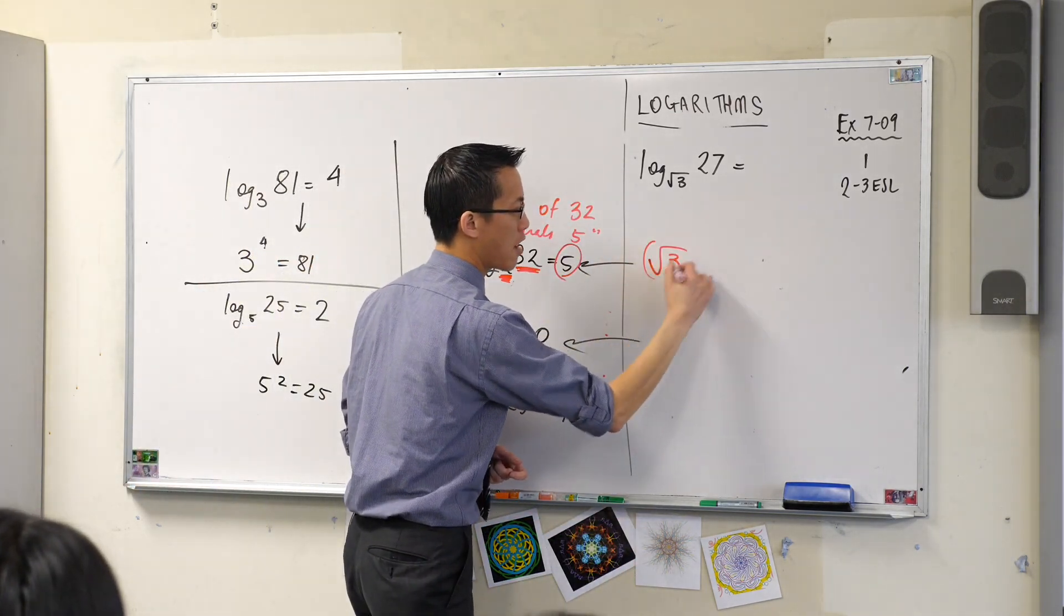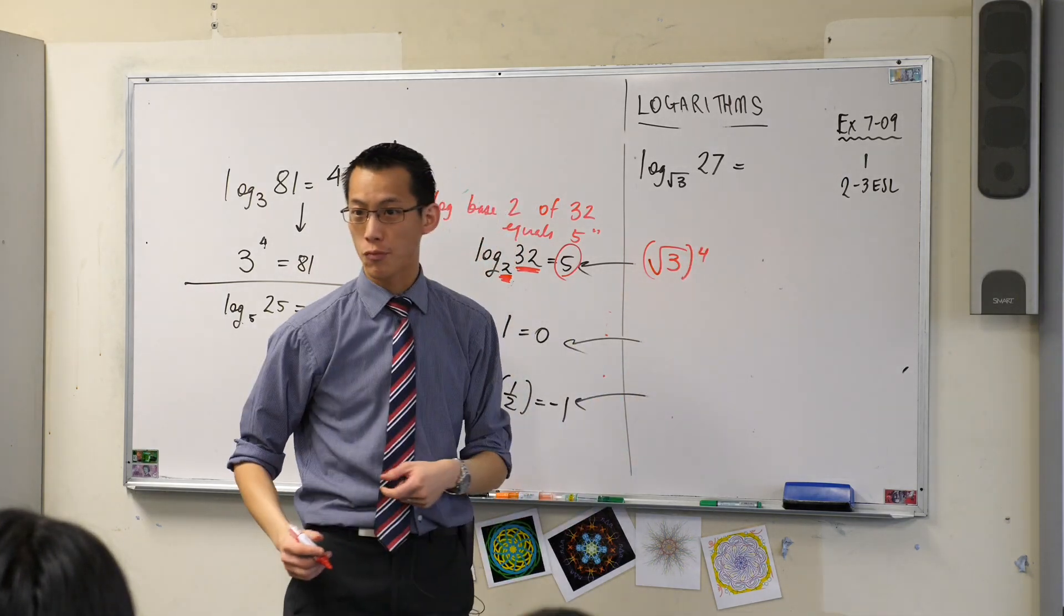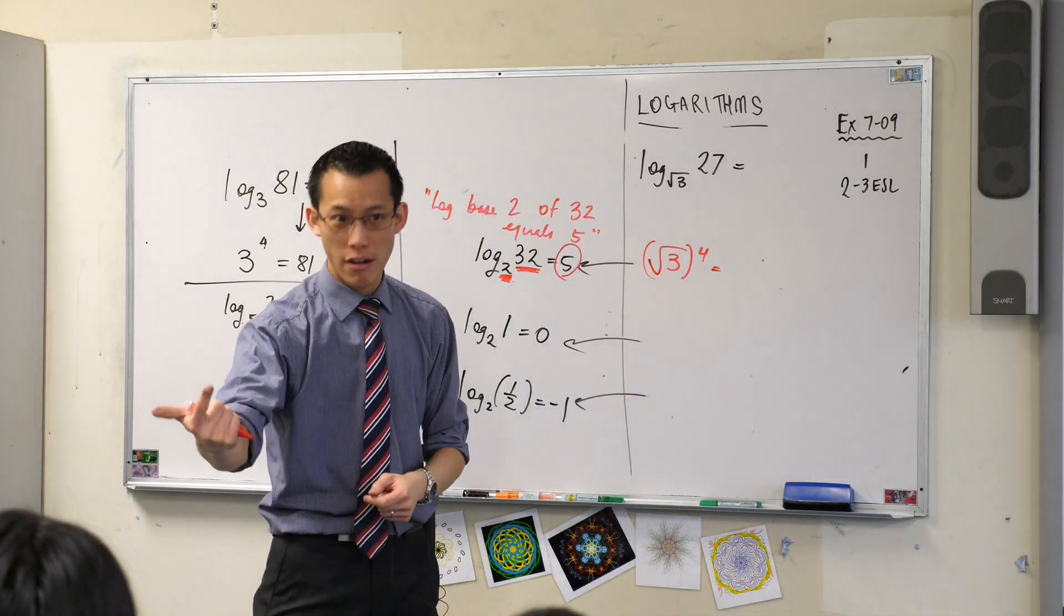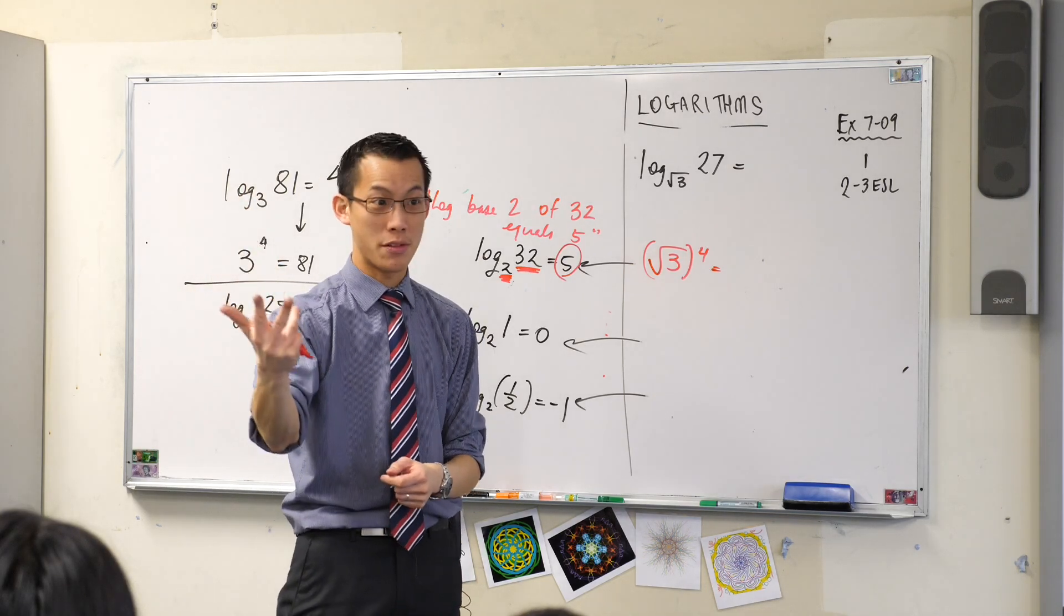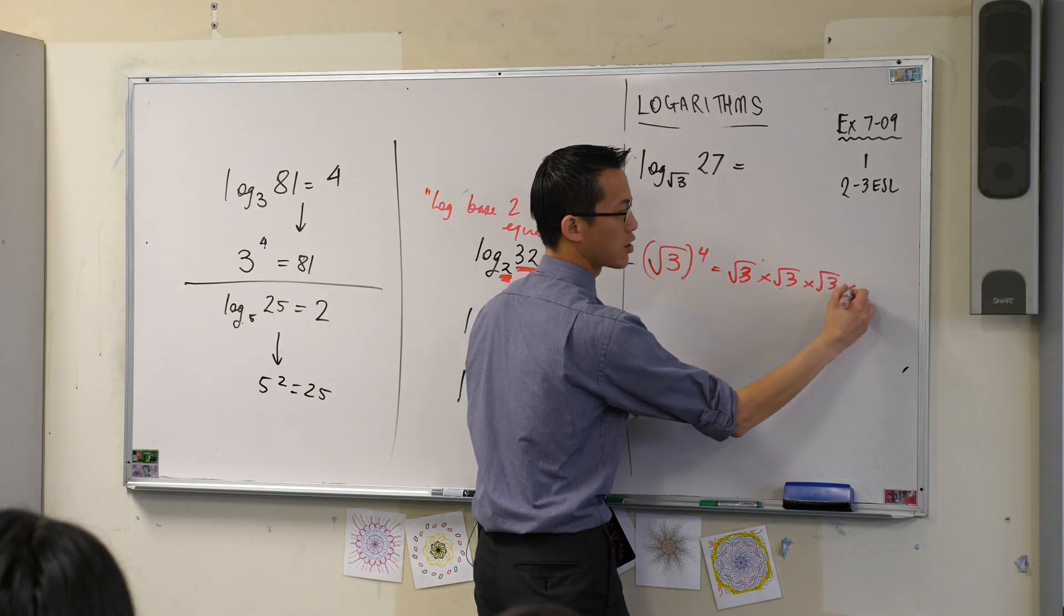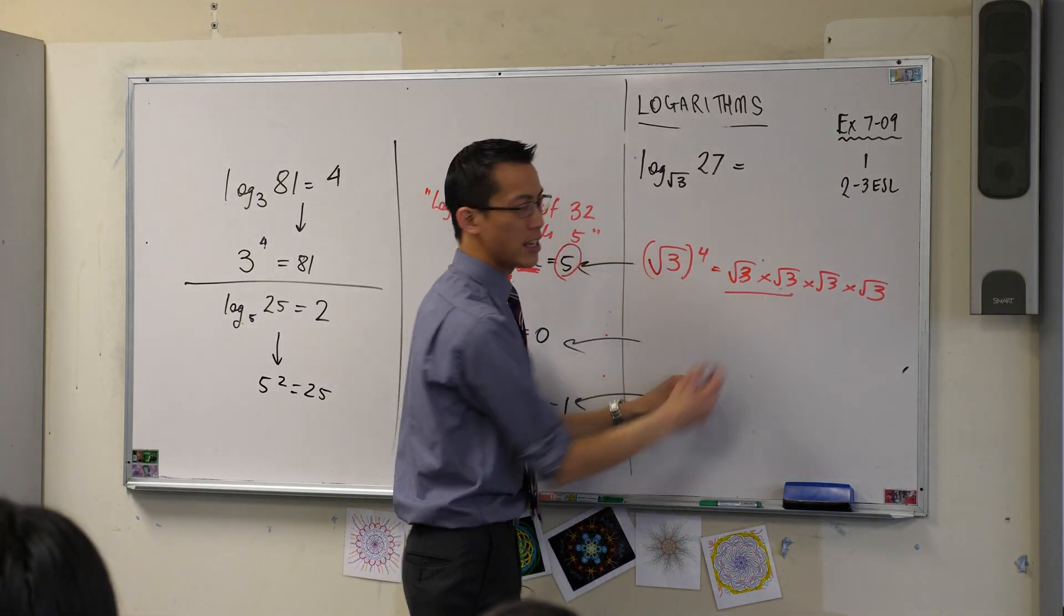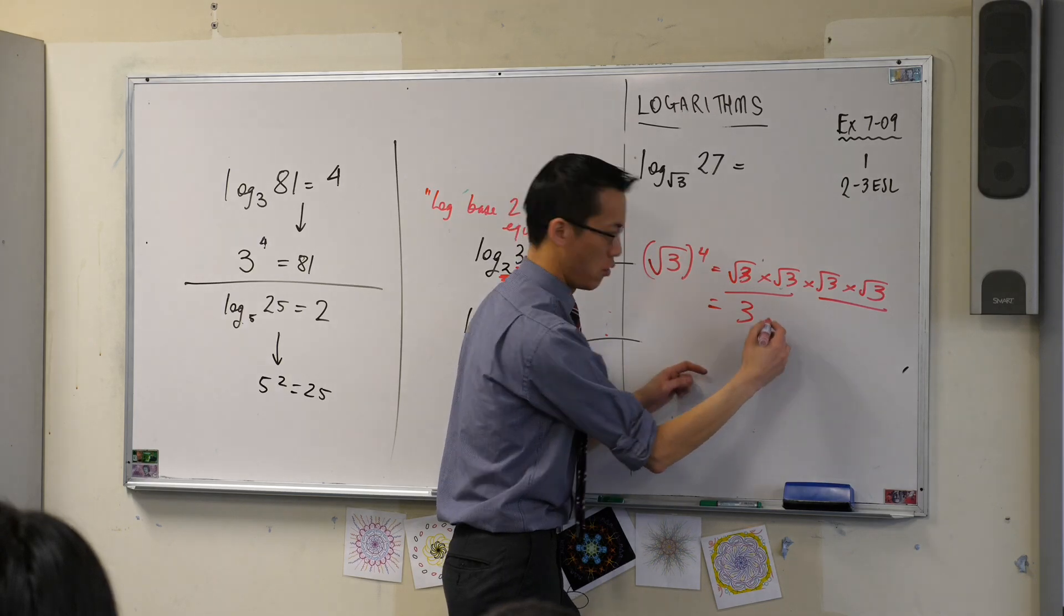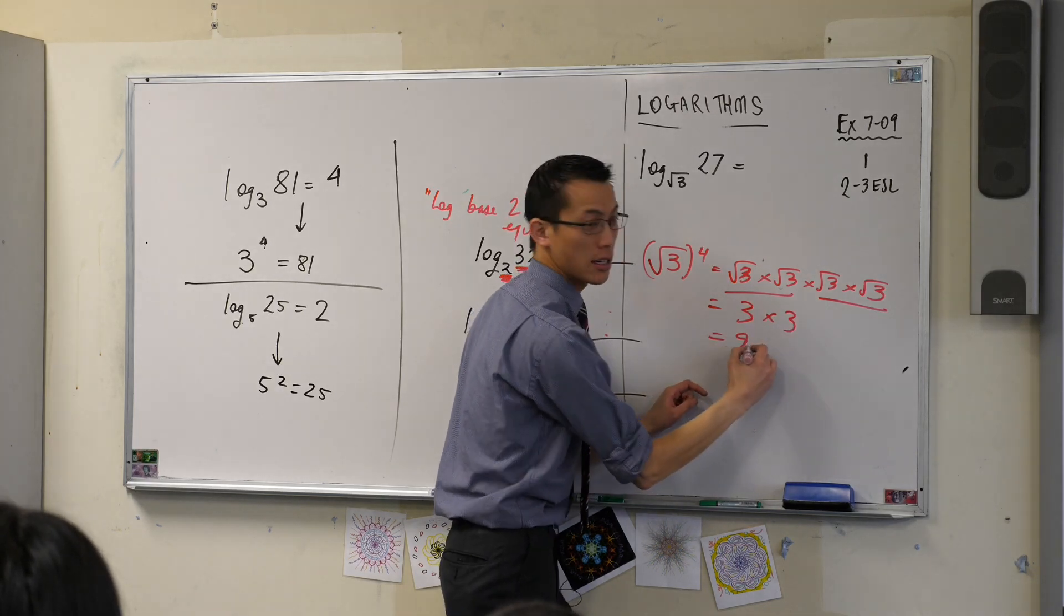The square root of 3 if I raise it to the power of 4. We're gonna learn something, right? This is root 3 times root 3 times root 3 times root 3, isn't it? So this is certainly getting us closer. It's on the way, isn't it? What's that equal to? Just the first two. That's 3. What about these? Also 3. So this gets us to 9.